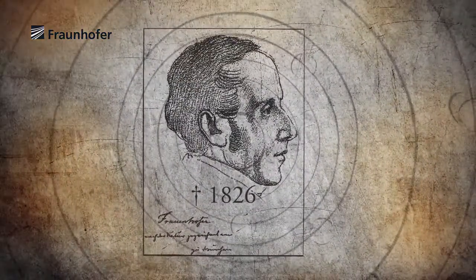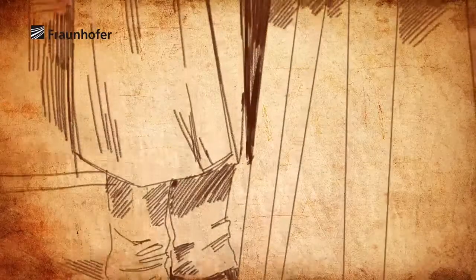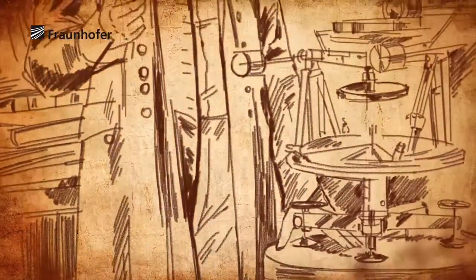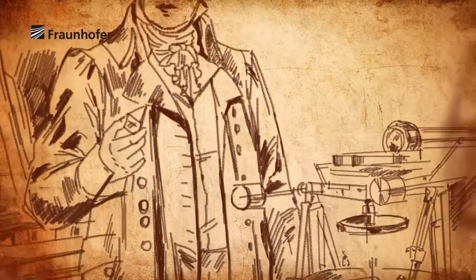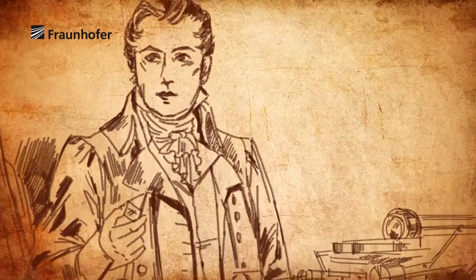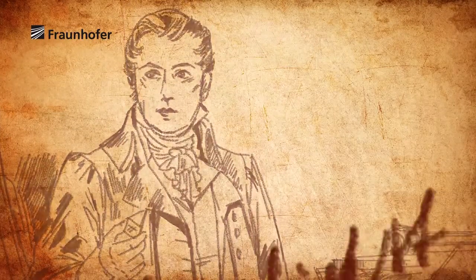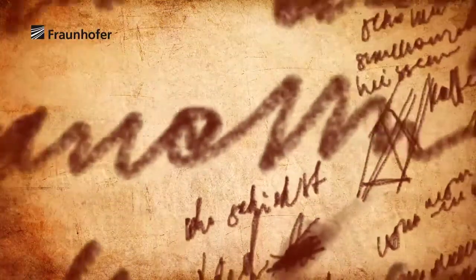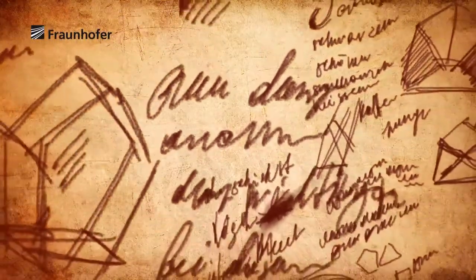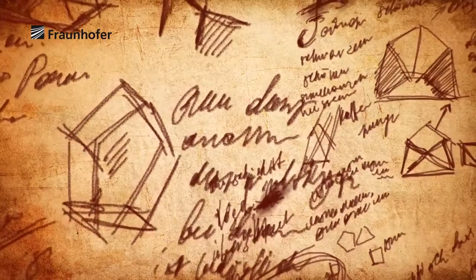Fraunhofer died at the young age of 39. The quality of his telescopes and optical instruments remained unmatched for decades. With the Fraunhofer lines, he laid the foundation for many areas of physics and modern astronomy. After 1826, other scientists tried to comprehend how the Fraunhofer lines work.